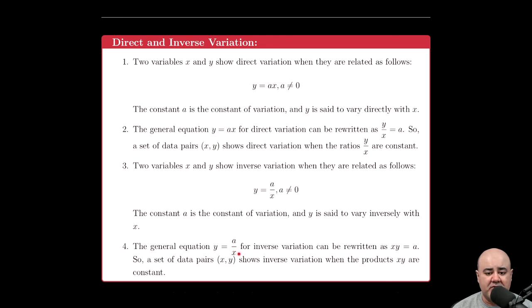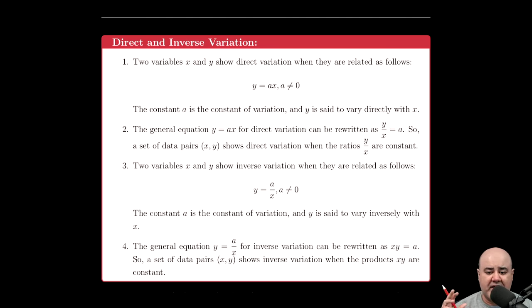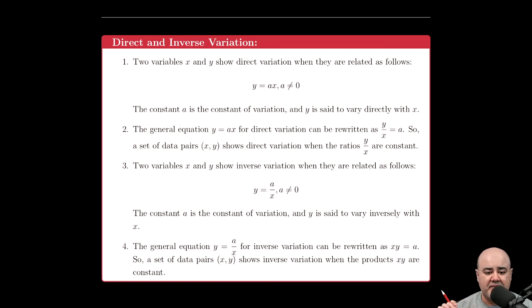Additionally, just like we did previously, what happens if we multiply x over to the other side to get the constant by itself? We get an expression that says xy = a. So if we have a set of ordered pairs, we can use this idea. If we multiply the x coordinate by the y coordinate and get some number—whatever that number happens to be, positive, negative, fraction, or decimal—as long as we don't get zero, we say that x and y vary inversely, or show inverse variation.